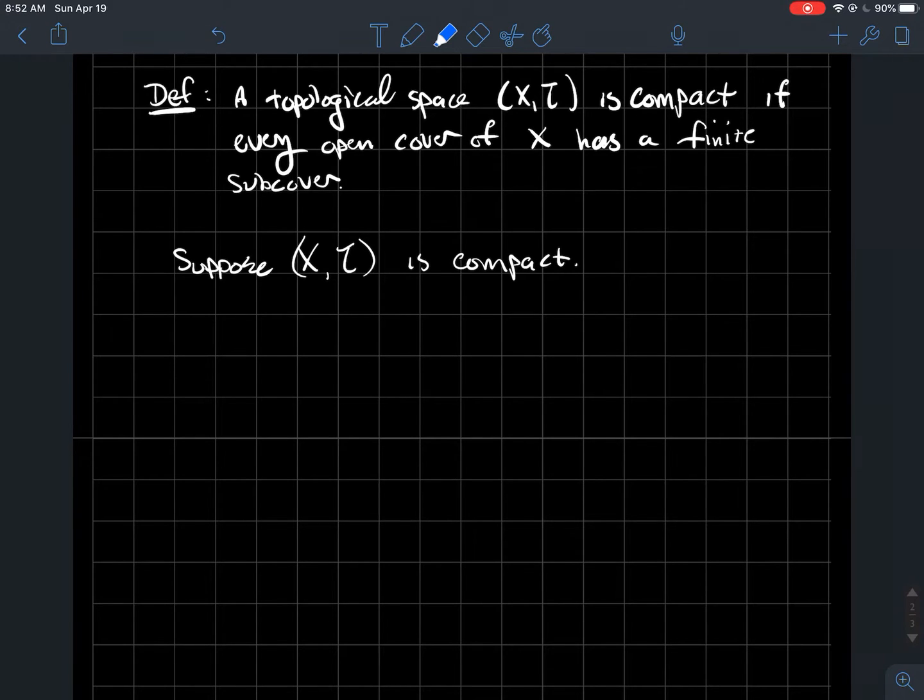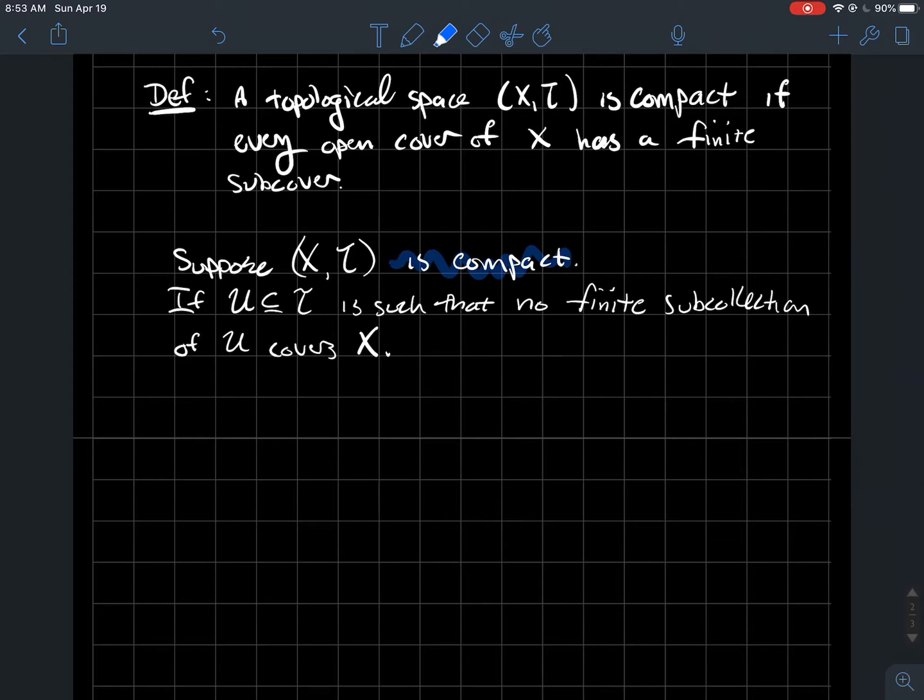We're going to twist this around and explore what else we can say. Let's say I've got a space X with topology τ that makes it compact. Suppose I had some collection fancy U of τ, and no finite subcollection of fancy U actually covers X. Wait a minute. If X is compact, I should always be able to find a finite subcover that covers X. So if I can't find one for this fancy U, then U just must not be a cover for X at all.